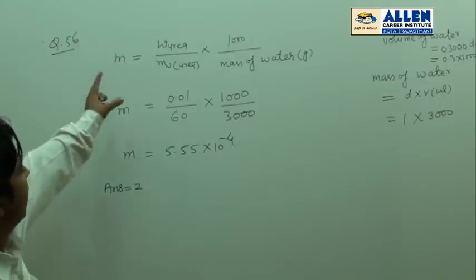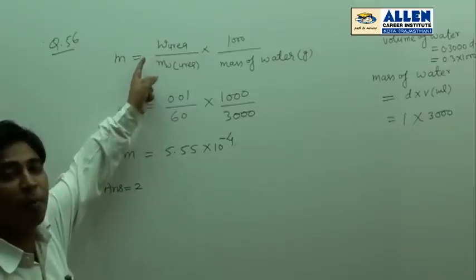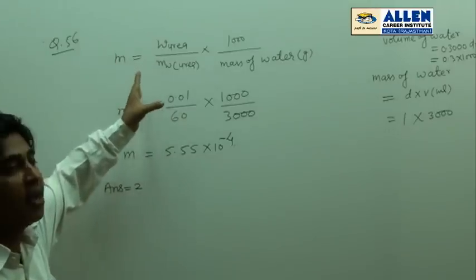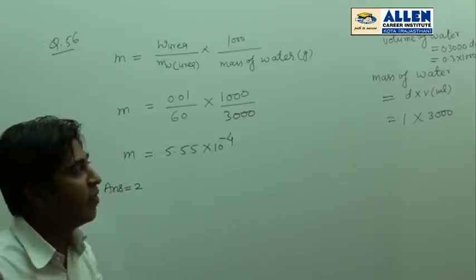We calculate the molarity of the solution. Formula: weight of urea upon molecular weight of urea into 1000 upon mass of water with solvent in grams.